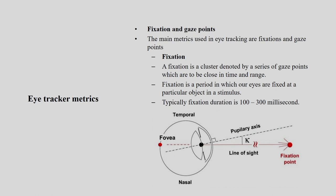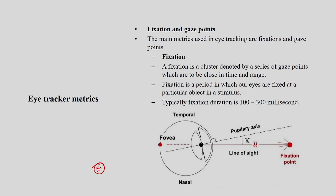Fixation is a cluster denoted by a series of gaze points that are close in time and range. You have gaze points — first, second, third... through to fourteenth — and together these form your fixation. Gaze is just a point, and when you have several gaze points at a very close range and time, that becomes the fixation. Fixation is a period during which our eyes are fixed at a particular object in a stimulus. Typically fixation durations are 100 to 300 milliseconds.